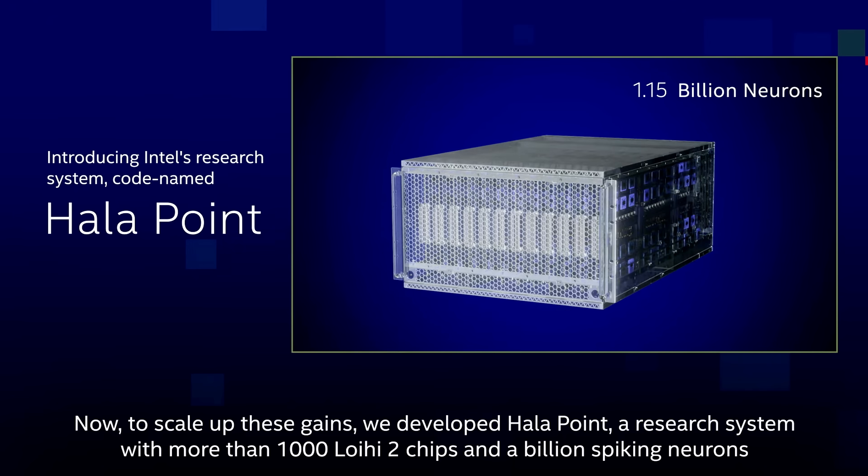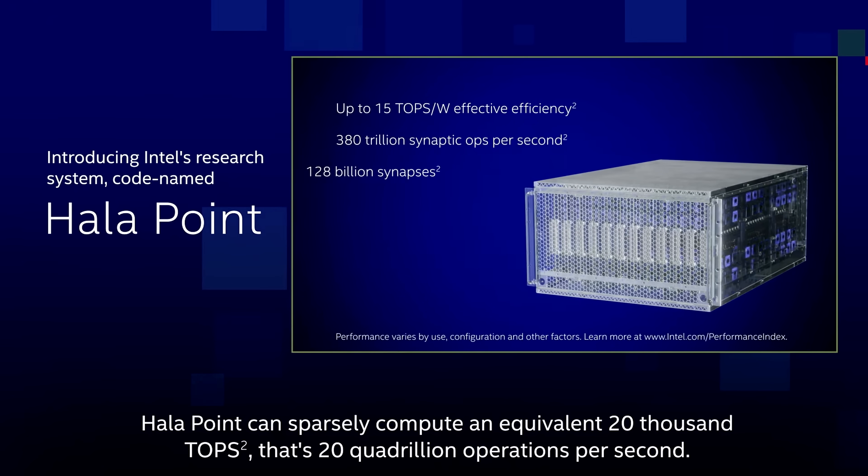Neuromorphic chip power consumption is usually measured by an activity factor — how regularly a neuron is used or fired. At low activity, the new 2D tunnel FET showcased several thousand times lower power per neuron fired.